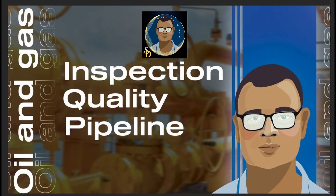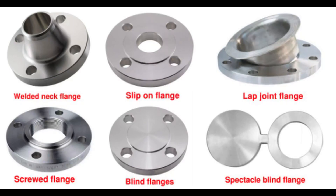Hello, knowledge seekers, welcome to my channel 'Oil and Gas Field Quality Control.' This is Shomen. Today our subject is about flanges — the components which are used to connect piping to pipeline, piping to piping, or piping to valves. Based on their purpose, flanges are of different types and have different types of surface finish. Let us start.